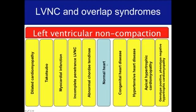Non-compaction can overlap with many conditions, including the normal heart, abnormal chordae tendineae, incomplete penetrance of non-compaction, myocardial infarction when a regional wall motion abnormality occurs and trabeculations may be more prominent, Takotsubo, dilated cardiomyopathy, congenital heart disease, hypertensive heart disease, apical hypertrophic cardiomyopathy, and a very interesting group of genotype-positive phenotype-negative hypertrophic cardiomyopathy — and I'll show you some examples where there may be an overlap between non-compaction and these conditions.